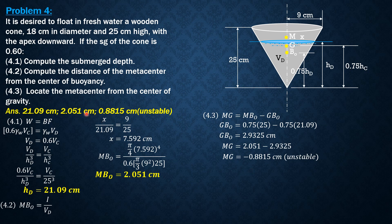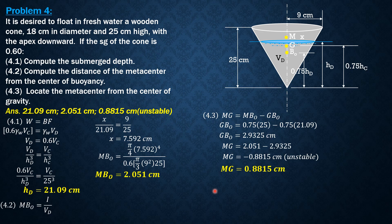But the question is just to locate the metacenter from the center of gravity, so that's the distance. Therefore, the distance of M metacenter from center of gravity is 0.8815 cm, but M is below the center of gravity. That's it for this problem. I hope you were able to follow the solution.